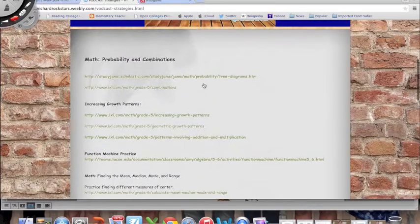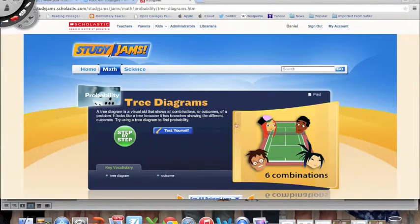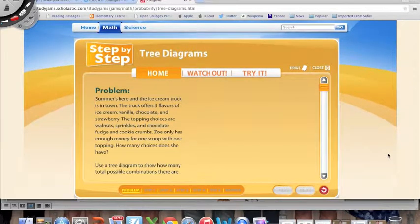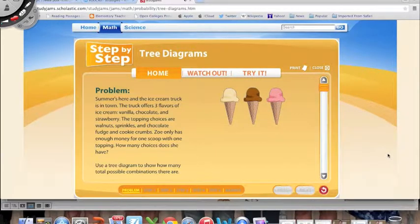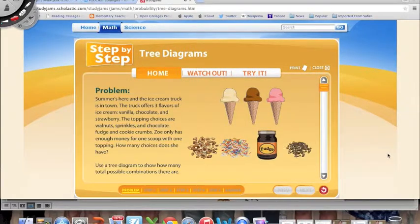There are two other areas where you can go. You can go to IXL for some combination practice right here, and finally the Study Jams this week. I actually just wanted to go through and listen as we watch. Summer's here and the ice cream truck is in town. The truck offers three flavors of ice cream: vanilla, chocolate, and strawberry. The topping choices are walnuts, sprinkles, chocolate fudge, and cookie crumbs. Zoe only has enough money for one scoop with one topping. How many choices does she have?